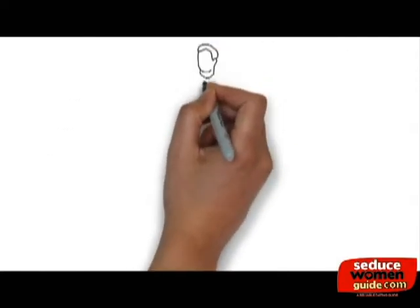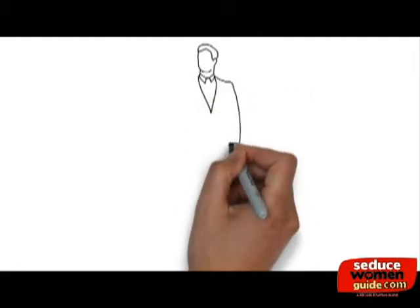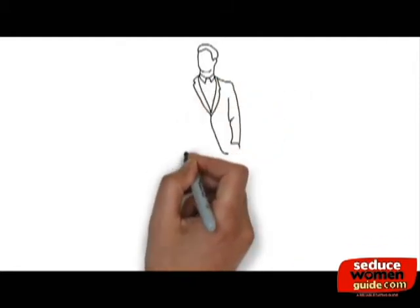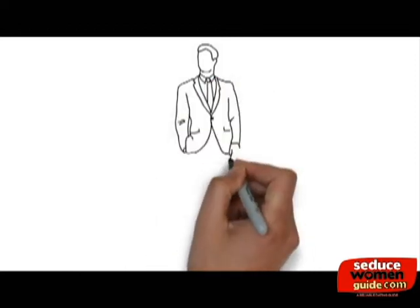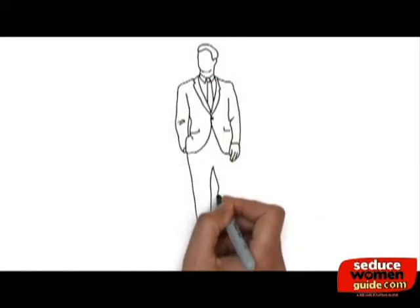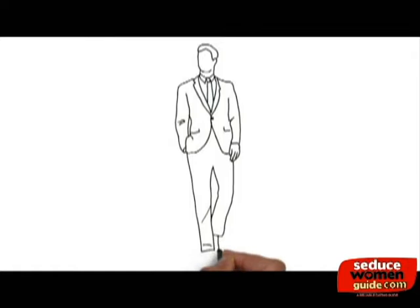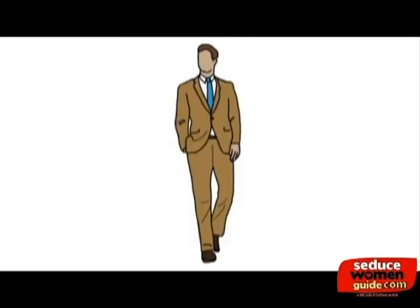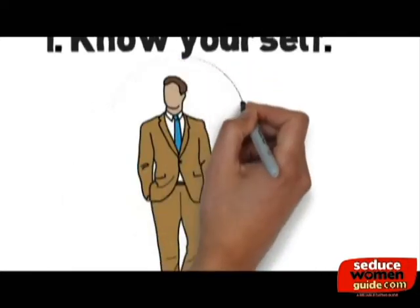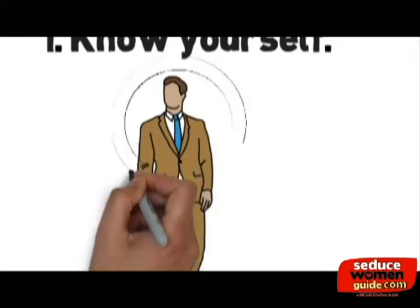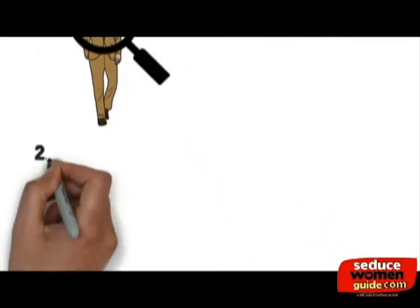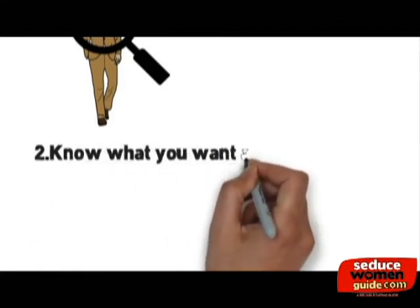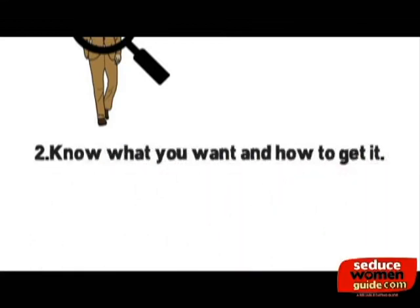1. Know Yourself. Alpha males evaluate themselves honestly. They know their strengths and weaknesses. An accurate assessment of yourself allows you to be more realistic with your expectations and goals. This will prevent a lot of frustrations. In addition to that, having an accurate evaluation of yourself allows you to know when to do things on your own, or when to ask for other people's help.